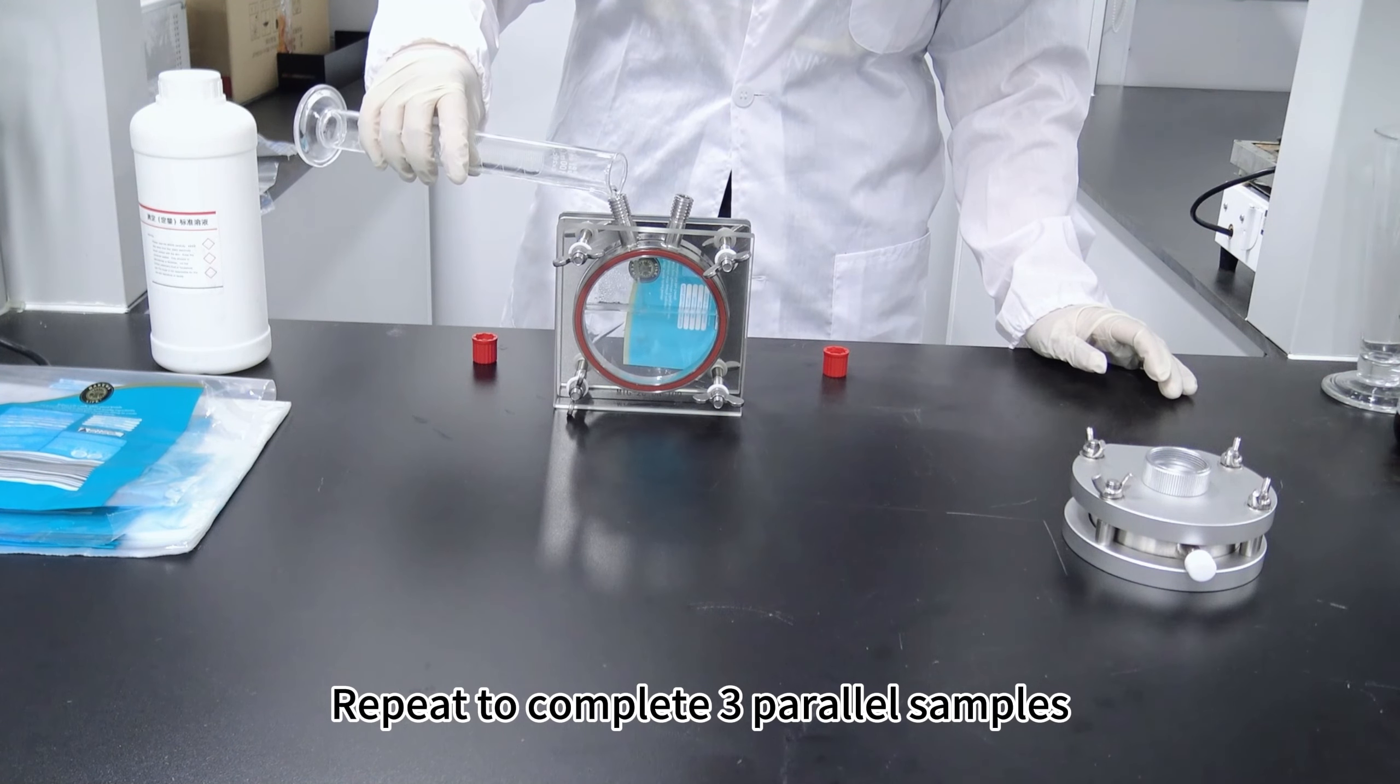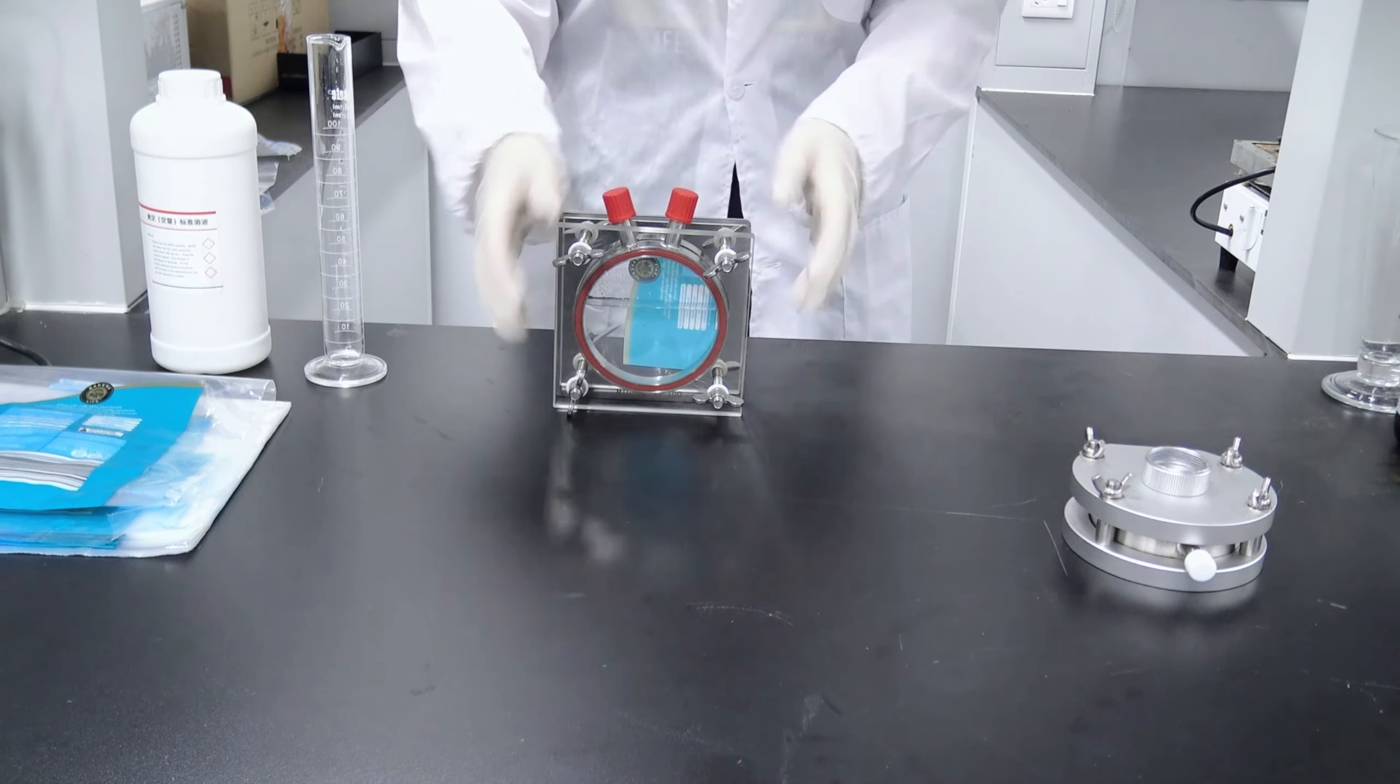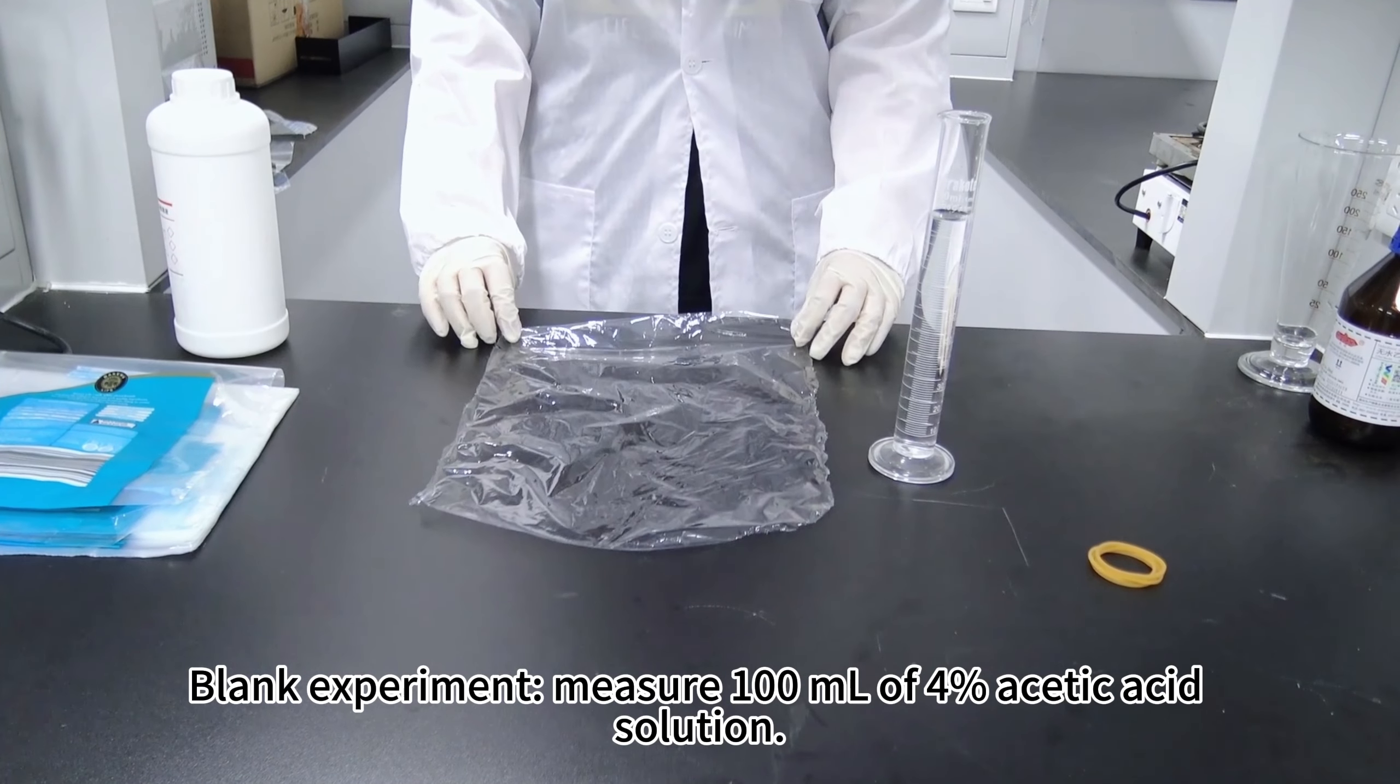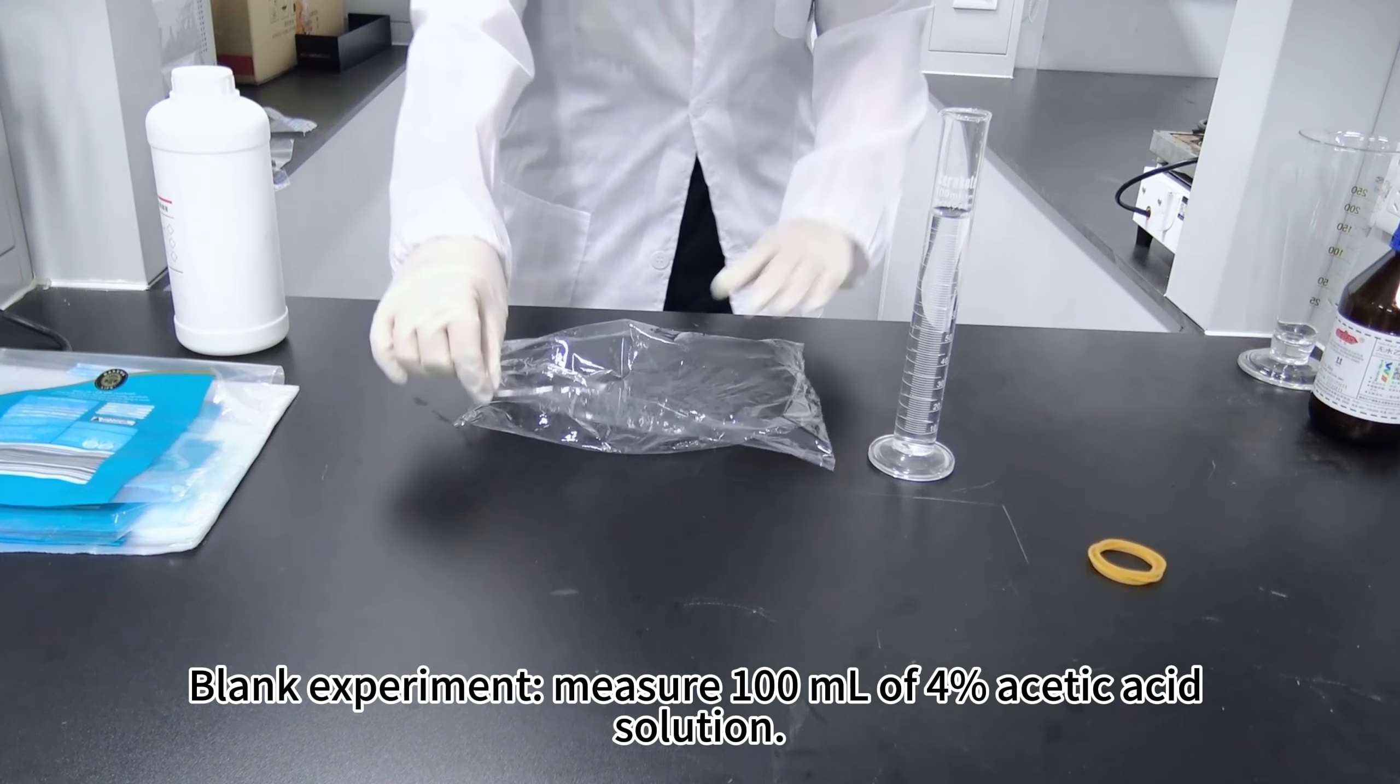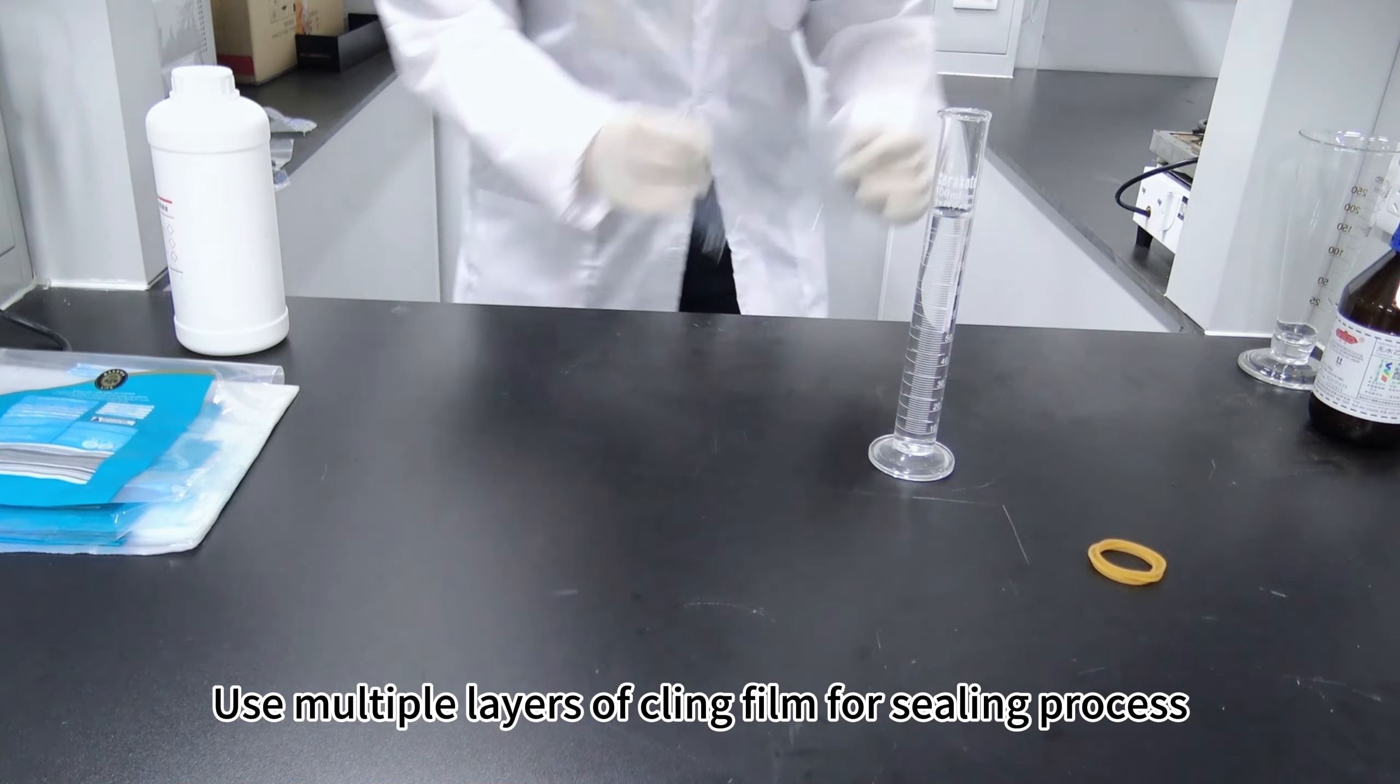Repeat to complete three parallel samples. Blank experiment: measure 100 milliliters of 4% acetic acid solution. Use multiple layers of cling film for sealing process.